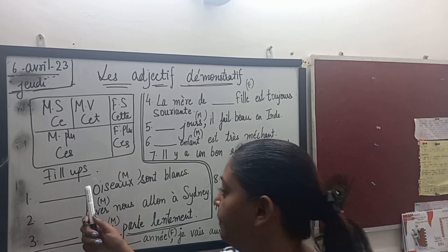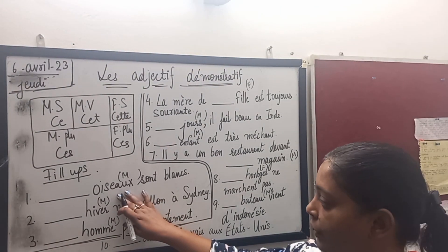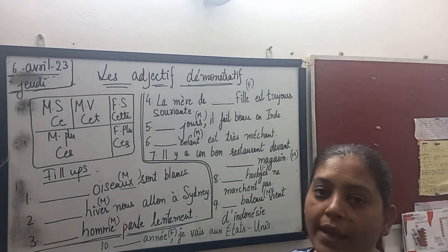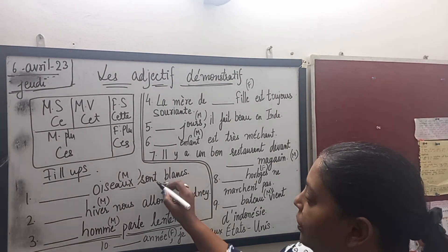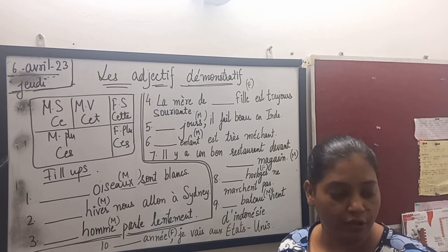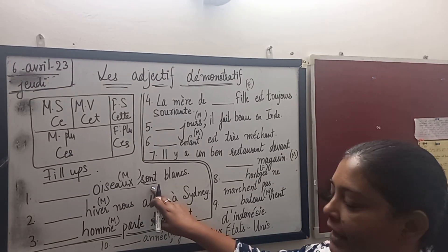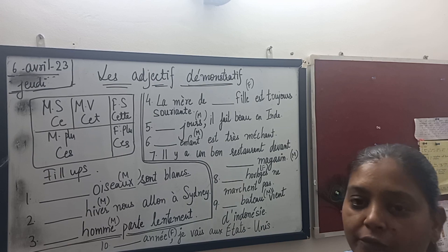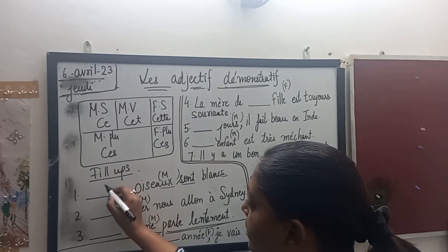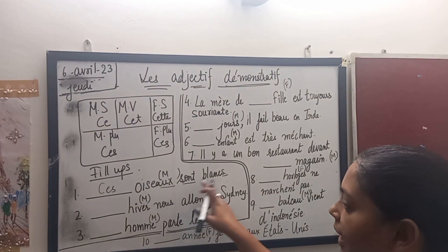The first fill-in is: oiseaux sont blank blancs. Oiseaux means birds. As we know, it is masculine, but it is ending with A-U-X, which means plural. And 'sont' — which we have learned with the être verb — is also plural. The word after the blank, 'blancs', also has S. So when masculine plural is here, we go to 'ces'. These birds are white, or those birds are white.